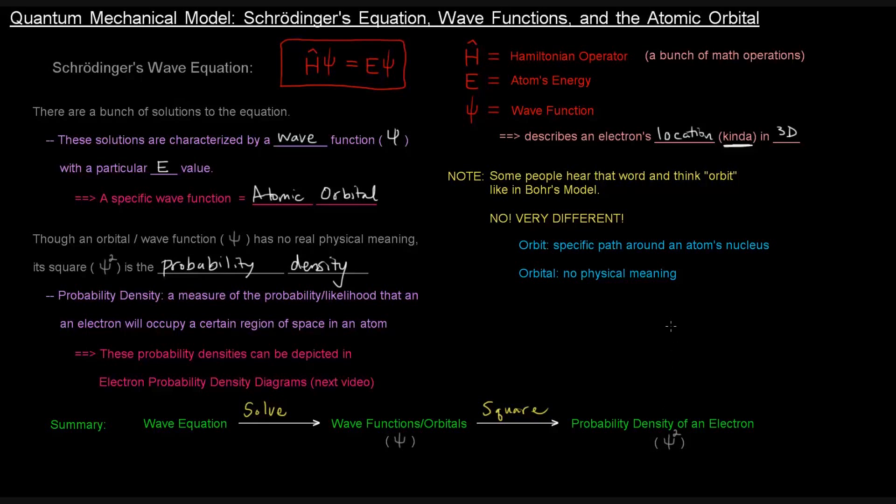So, I hope that video was helpful with a sort of overview of what's going on with Schrödinger's equation, how that applies to wave functions and the atomic orbitals. So, we'll see what's going on in these electron probability density diagrams in the next video. I hope that video was helpful. Thank you for watching.